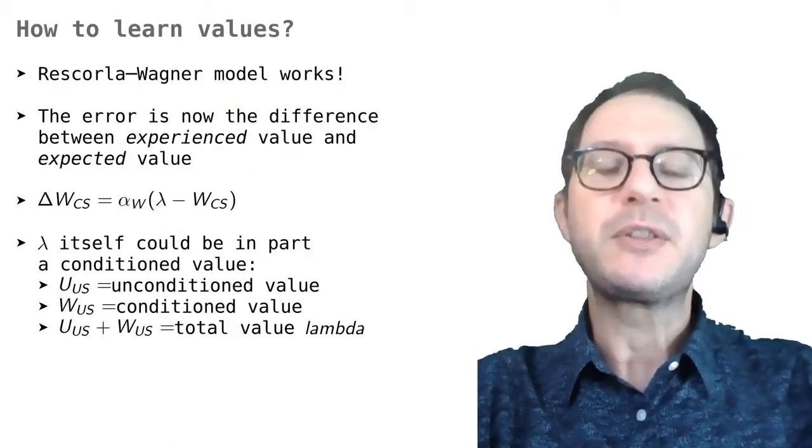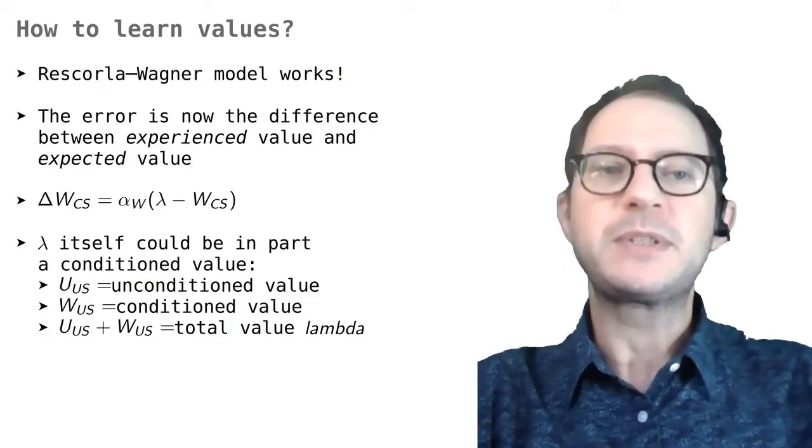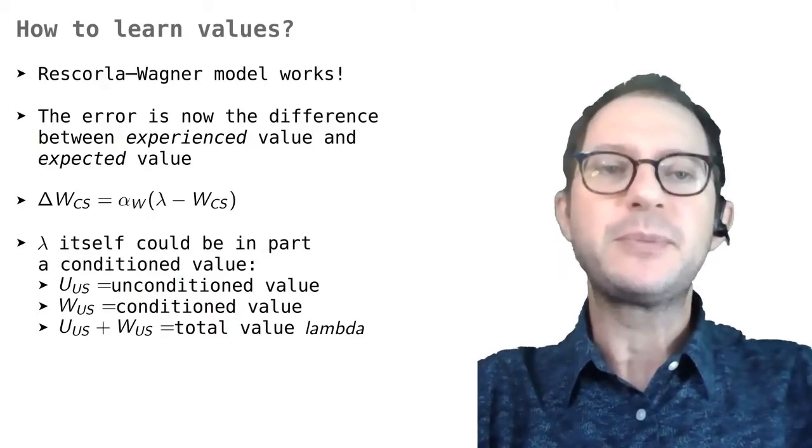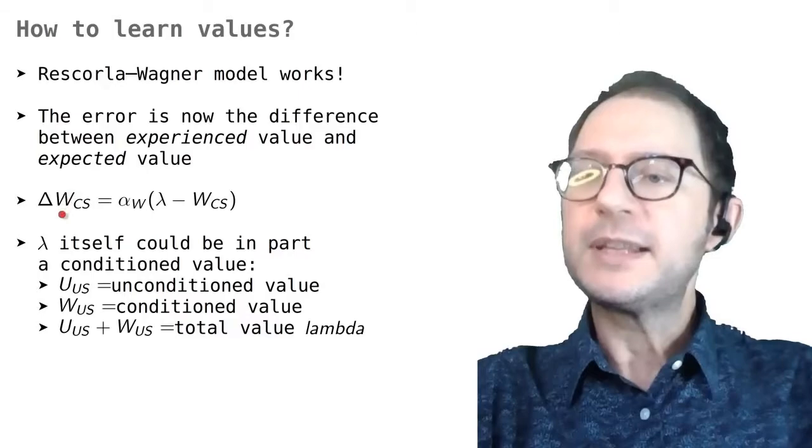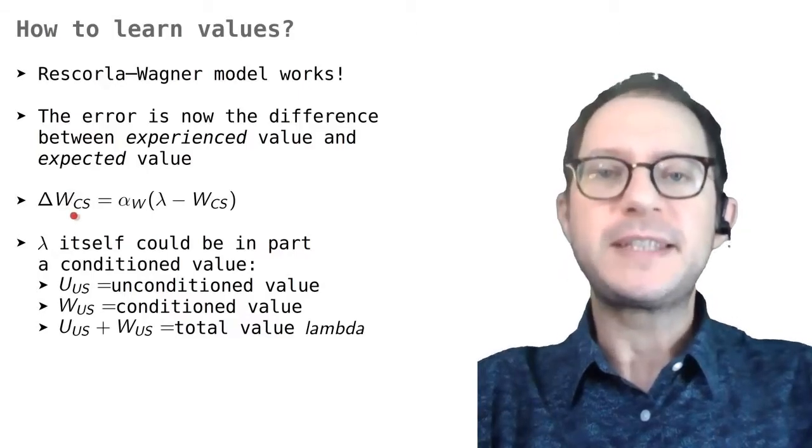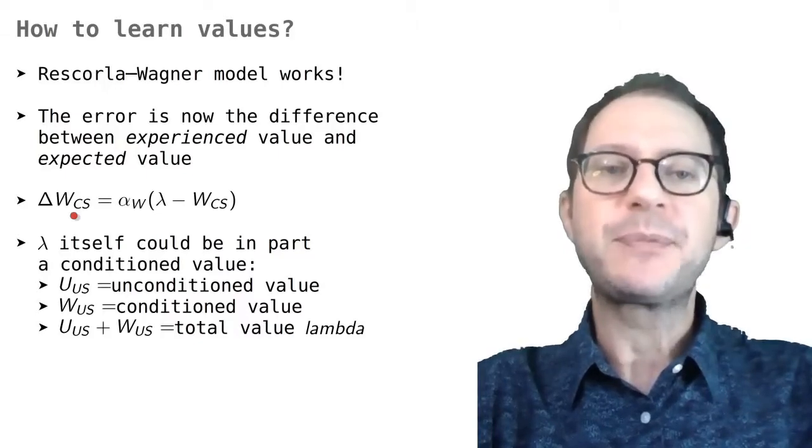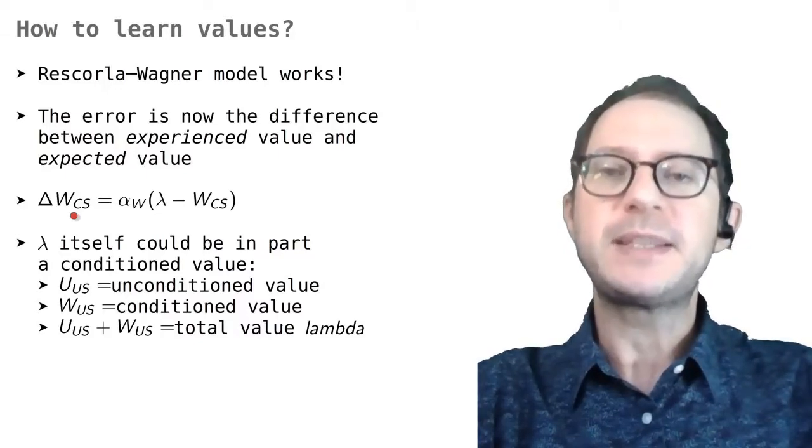Let's now see how we can learn the value of things. We already know how to learn the value of actions, as we saw in the lessons on learning action. There, we use the Rescorla-Wagner model, and it turns out we can also use it here. Let's call WCS the value of the CS. At the beginning of a Pavlovian conditioning experiment, the value is zero, because as we know, the animal considers the CS meaningless.